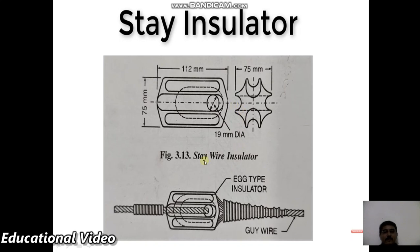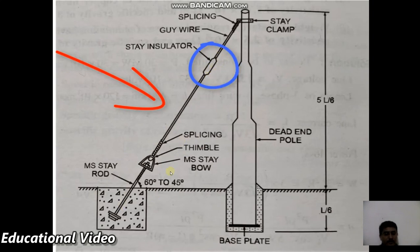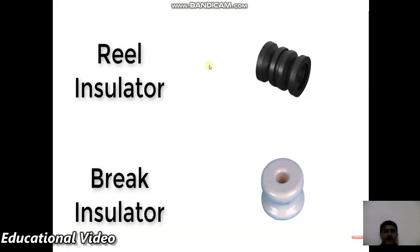The stay insulator, also called an egg type insulator, has no voltage present across it during normal working conditions. It is used to provide additional mechanical support to a pole to prevent bending when the line exerts lateral force. This stay wire mechanism keeps the pole stable under load.